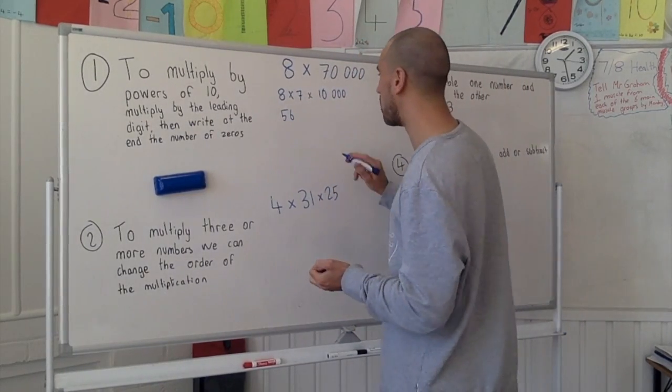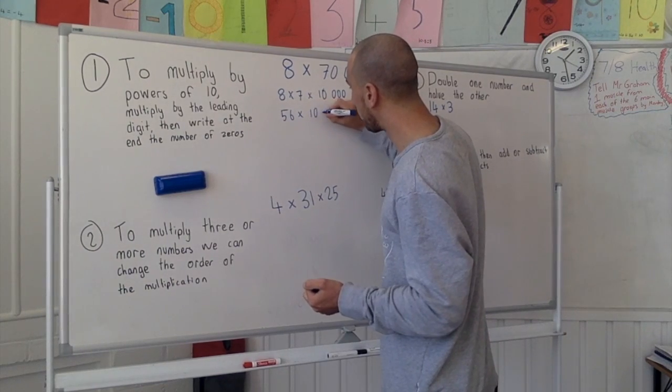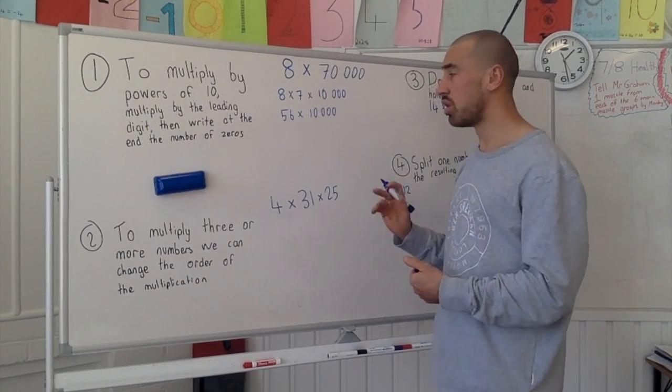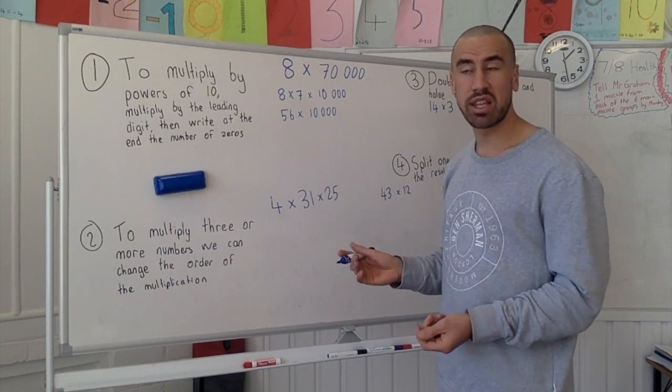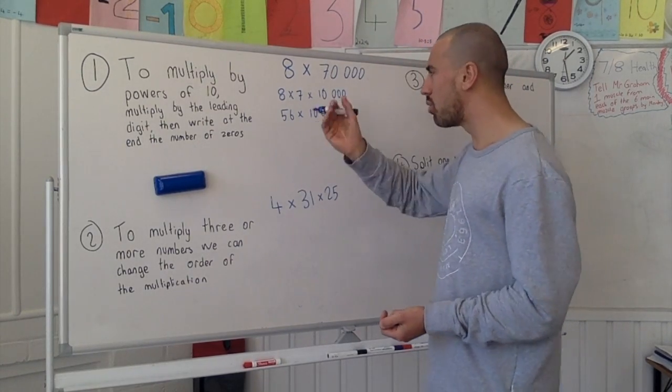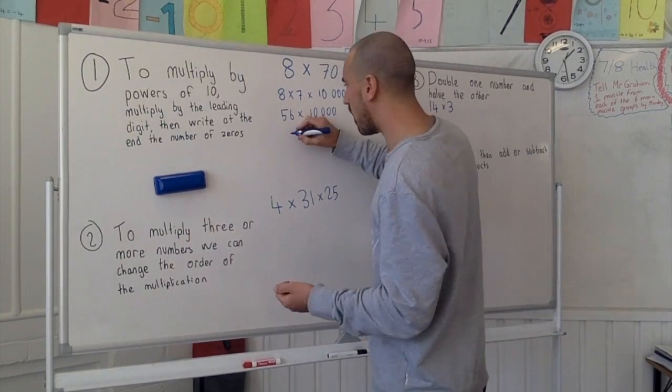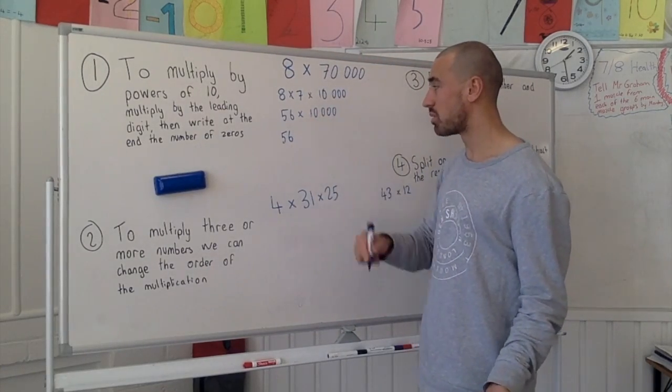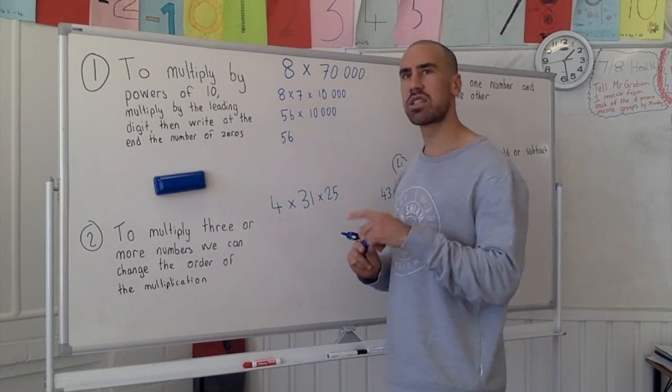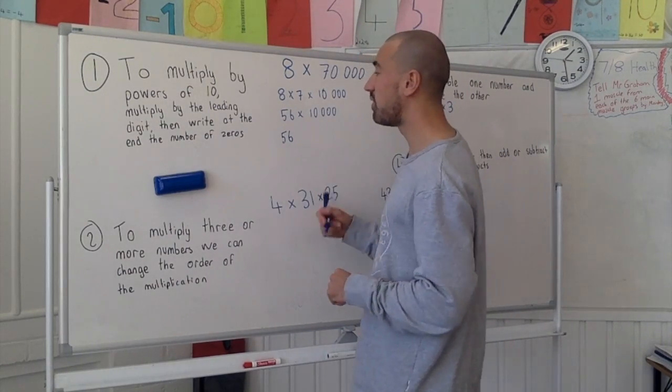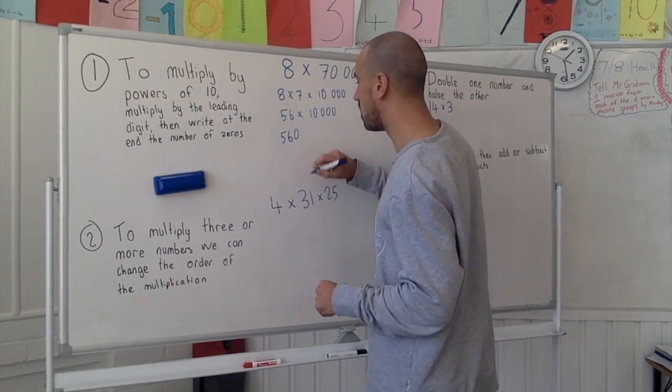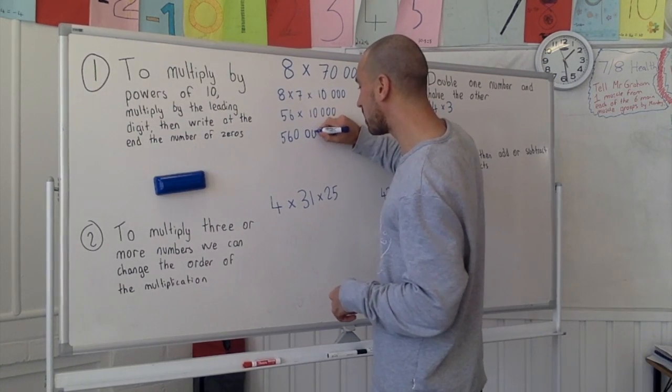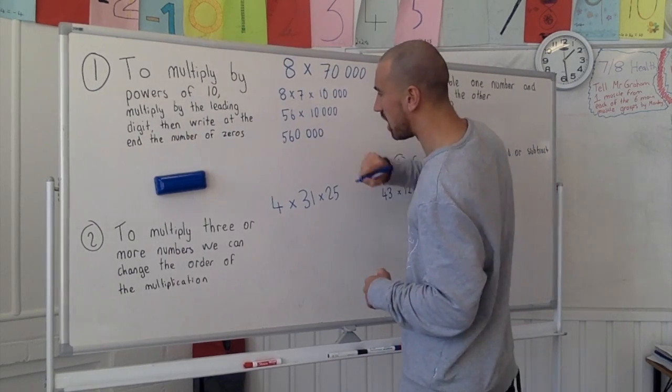56 times 10,000. Now that's, we can do times 10,000 in our head pretty easily, and if we are struggling we can do it just by moving the decimal place over. So we know that it's going to start with a 5 and 6 because it's times by 10,000. So 56 times 1 gives us 56, 56 times 10 is 560, 56 times 100, 56 times 1000, and 56 times 10,000.